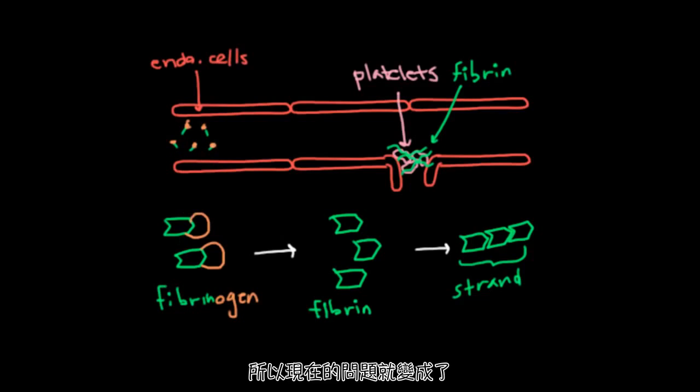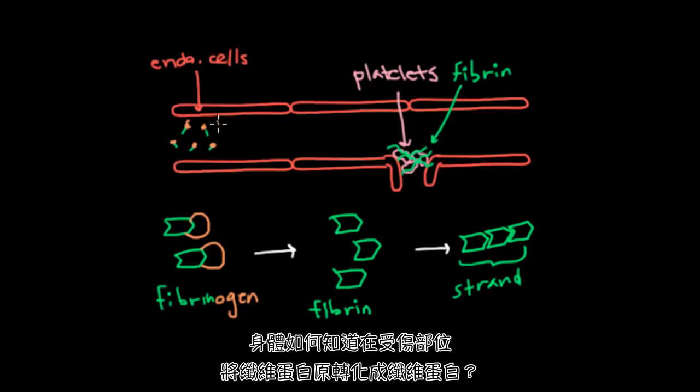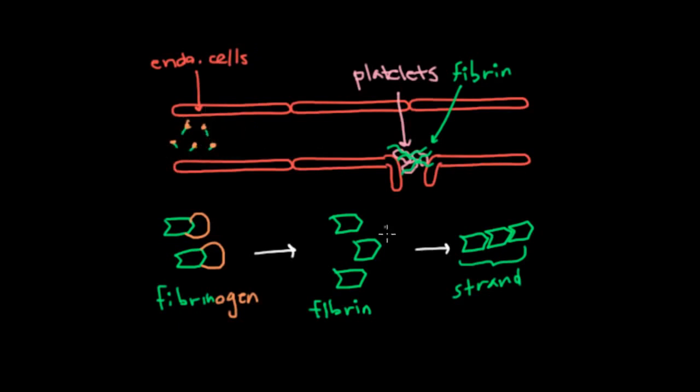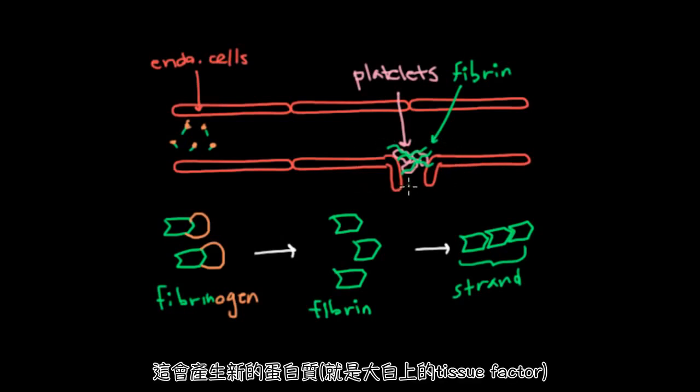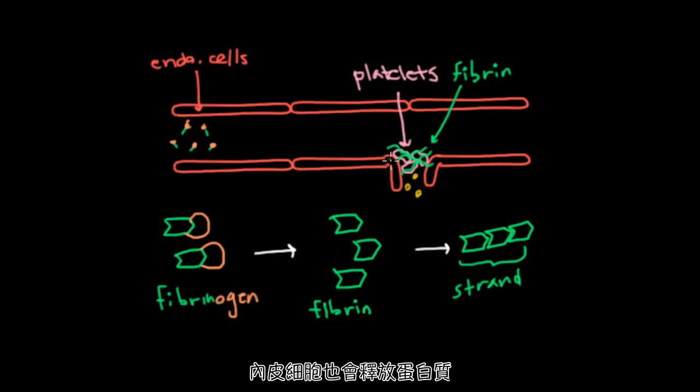So the question then becomes, how does your body know to convert fibrinogen into fibrin at the site of injury? And the answer is that when you injure your endothelium here, you're going to expose your blood to new proteins. And maybe your actual endothelial cells will release some proteins because they're damaged. So basically, you have new proteins that weren't seen before and that are seen now. And those proteins will eventually cause fibrinogen to turn into fibrin.